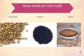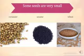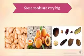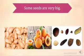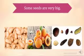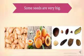Now, some seeds are very small — like coriander, sesame, and wheat. These seeds are very small in size and there are many other seeds which are also very small. Next, we have divided the seeds which are very big according to their size.